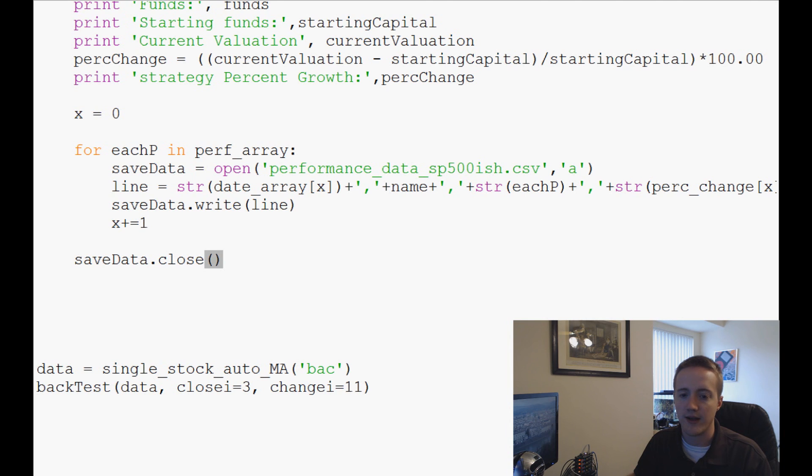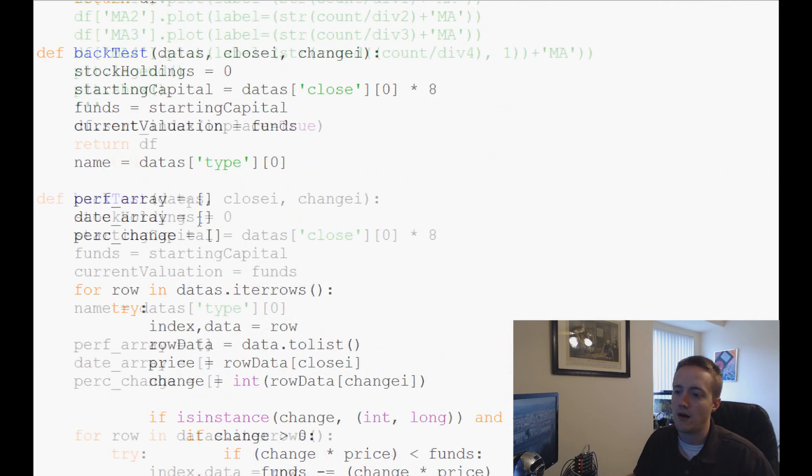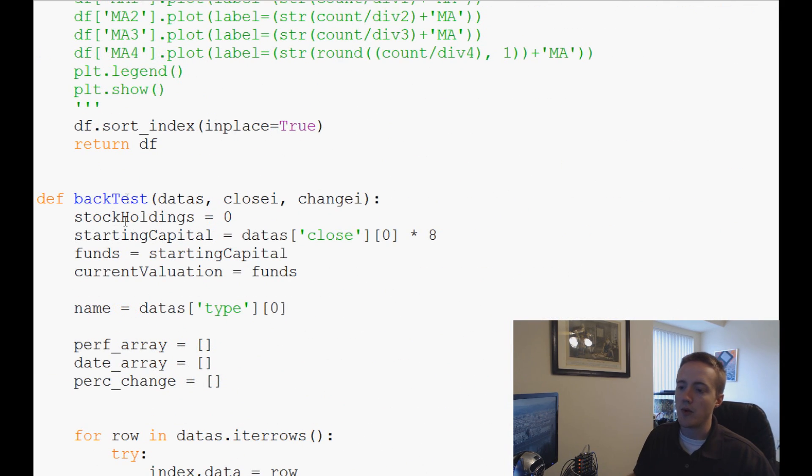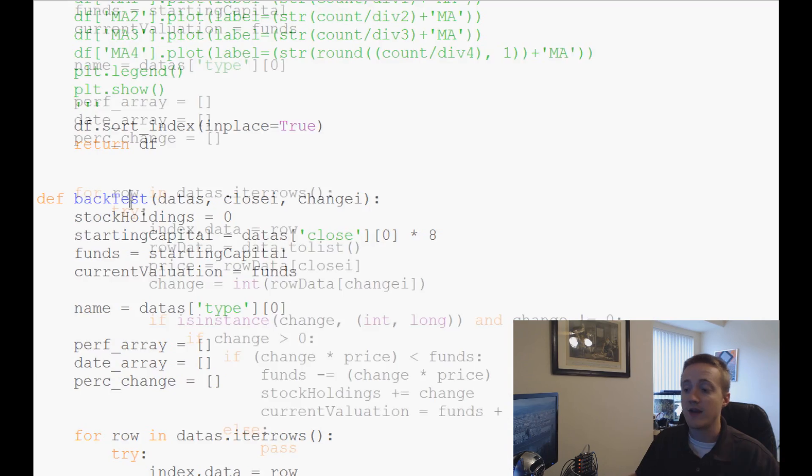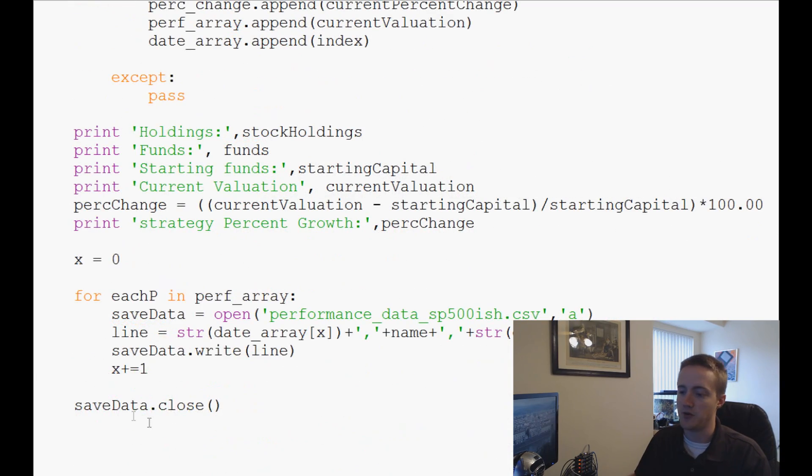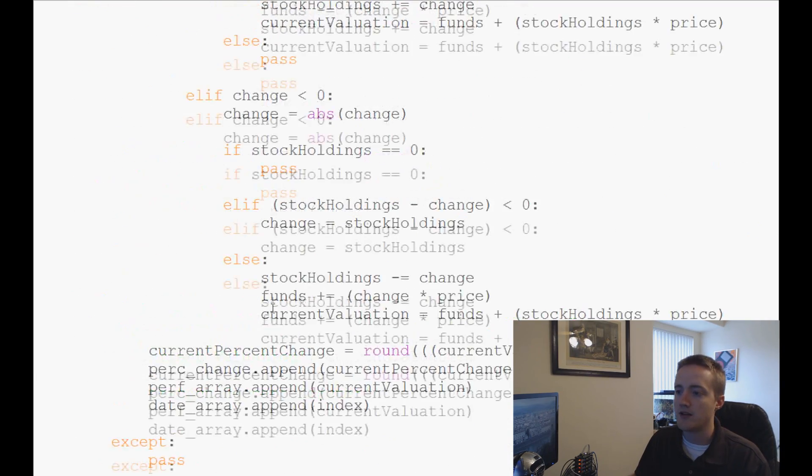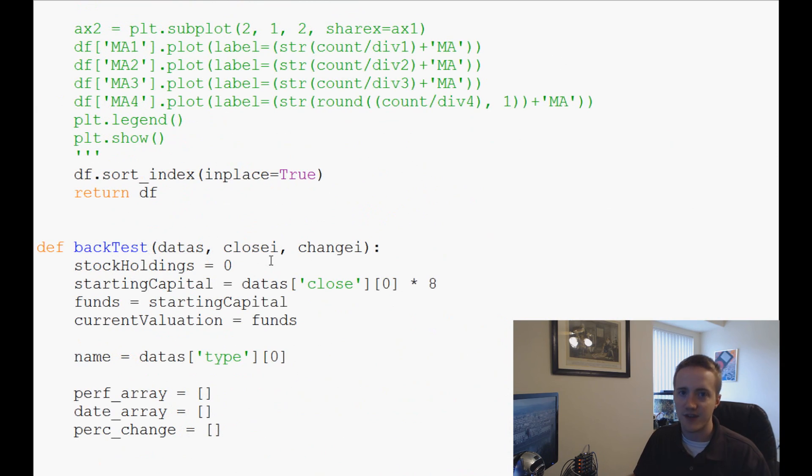So once we've done that, now the next thing that we want to do is basically we've defined this entire back test, but what we want to do now is we actually want to, and we've saved, or at least sort of saving it to a file, but we need to also iterate through all of the stock company names that we have.